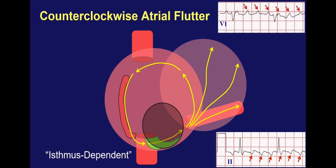In V1, you typically see the opposite orientation with positive flutter waves, and this likely reflects the wavefront coming toward V1, toward the front of the chest, across the top of the right atrium.